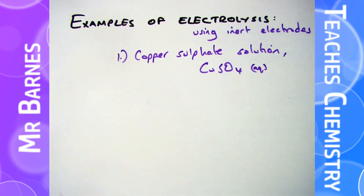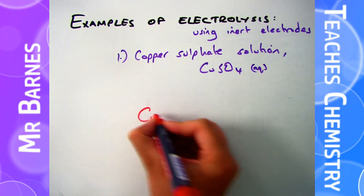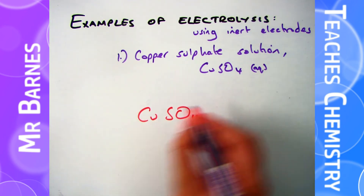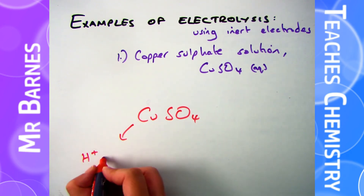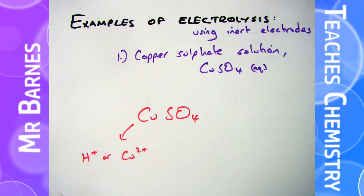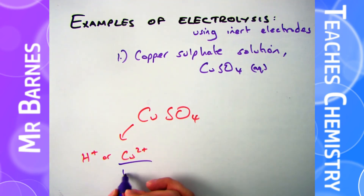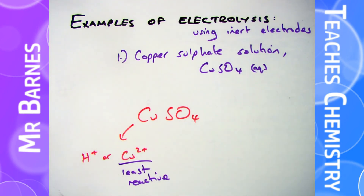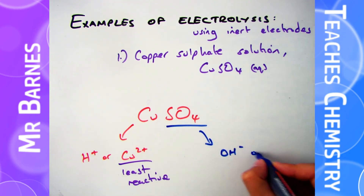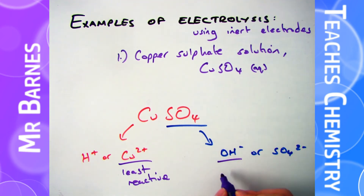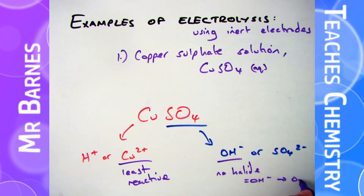Let's have a look at a few examples. Copper sulfate solution CuSO4 is dissolved in water, therefore at the cathode I'm either going to have H+ or Cu2+ moving there. Copper is a transition metal therefore it's the least reactive, so copper ions are going to go to the cathode and turn back into copper. Looking at the anion, I've got SO4 - I do not have a halide - so I'm going to have my hydroxide going there, therefore I'm going to get oxygen produced.